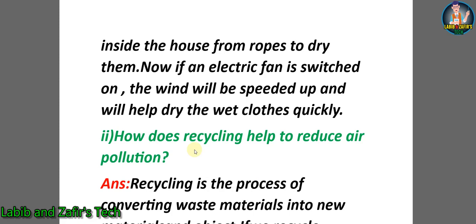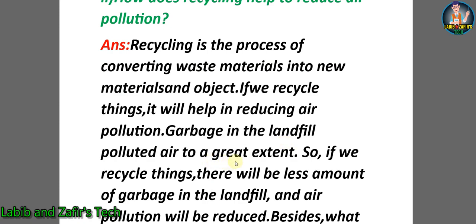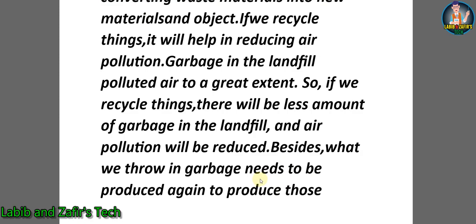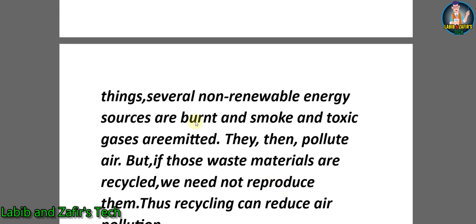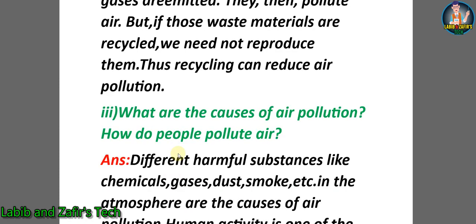Second question: How does recycling help to reduce air pollution? Answer: Recycling is the process of converting waste materials into new materials and objects. If we recycle things, it will help reduce air pollution. Garbage in the landfill pollutes air to a great extent. If we recycle things, there will be less garbage in the landfill. Besides, what we throw in garbage needs to be produced again. To produce things, non-renewable energy sources are burned; smoke and toxic gases are emitted. But if waste materials are recycled, we need not reproduce them. Thus recycling can reduce air pollution.